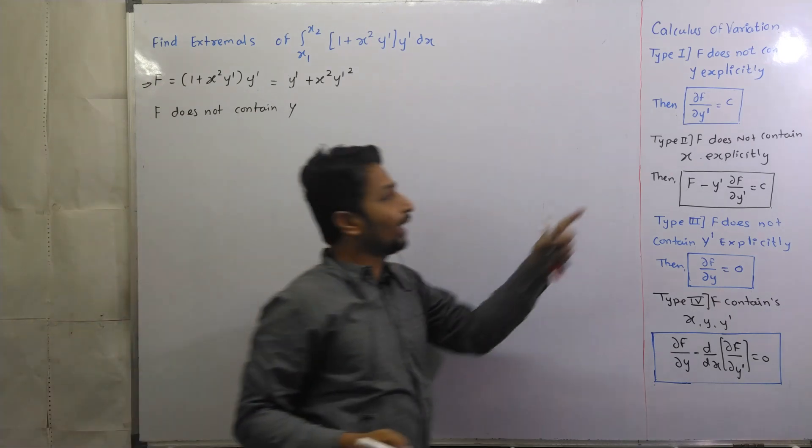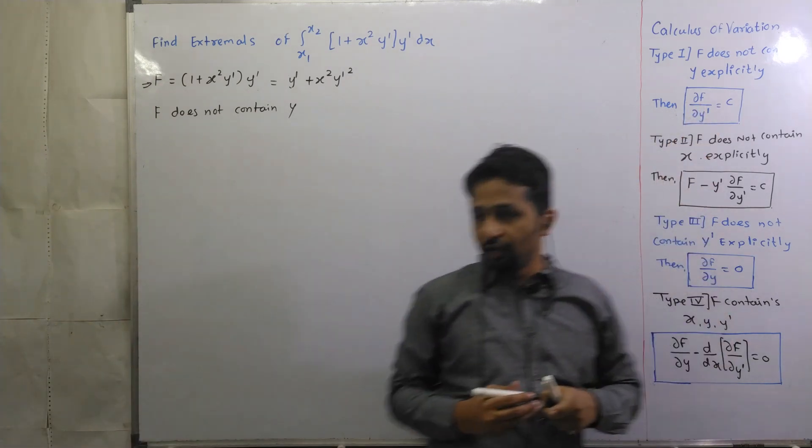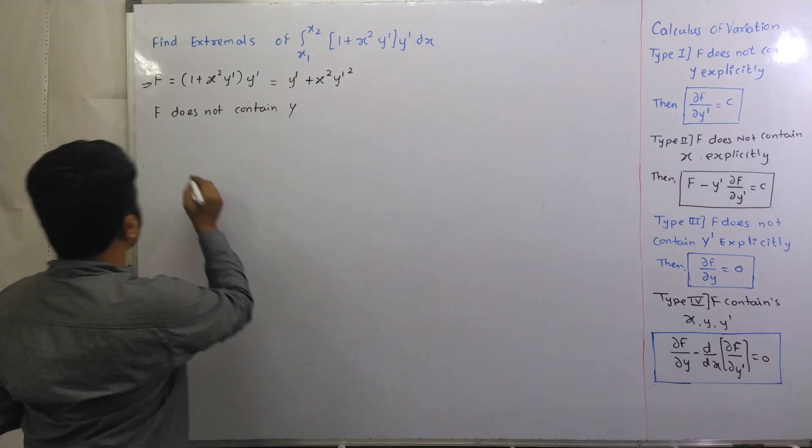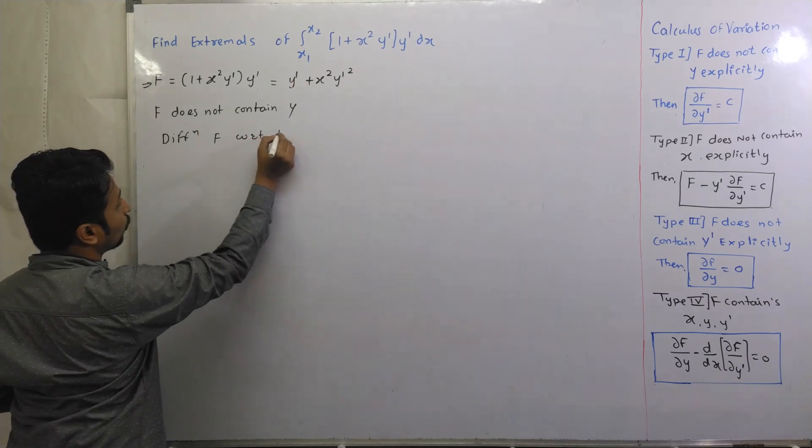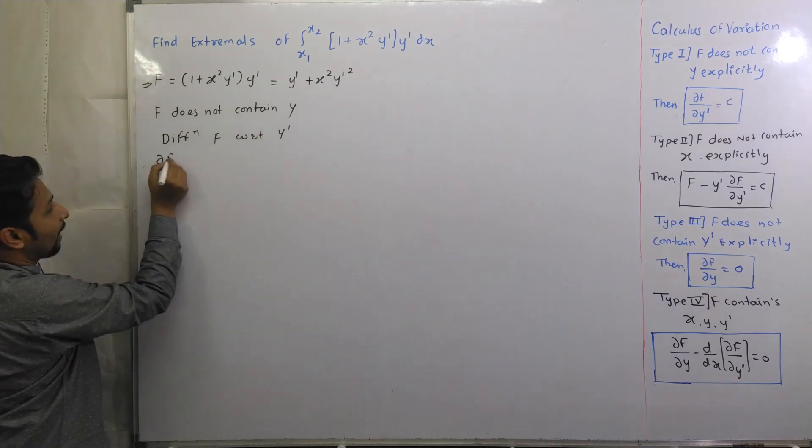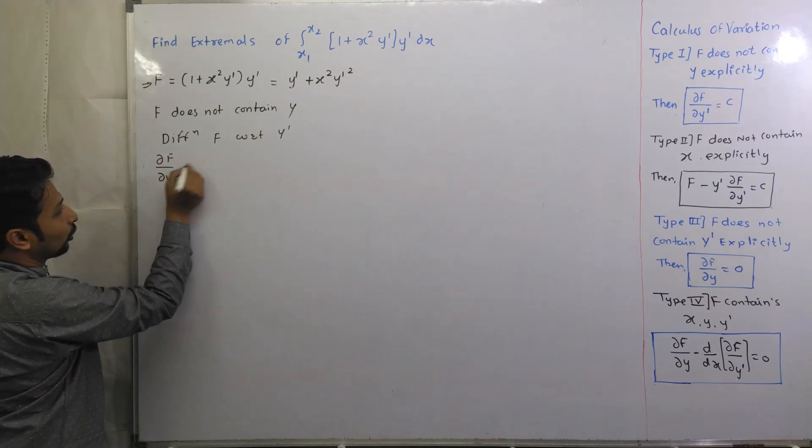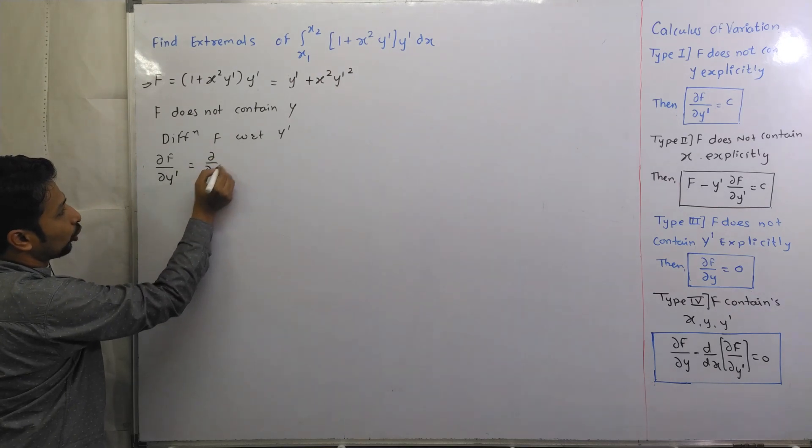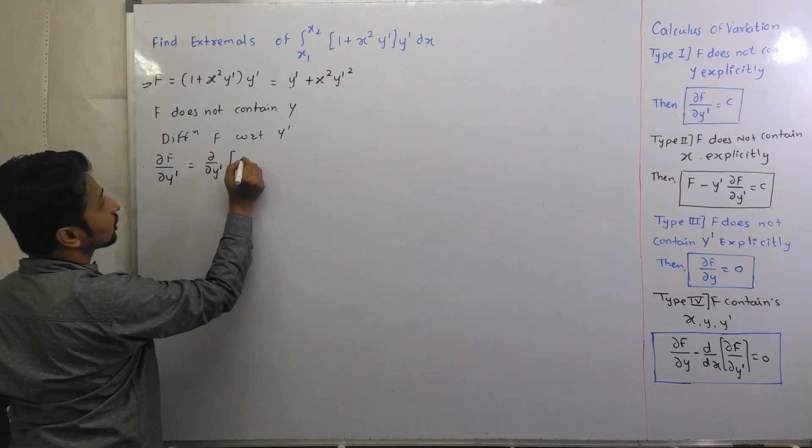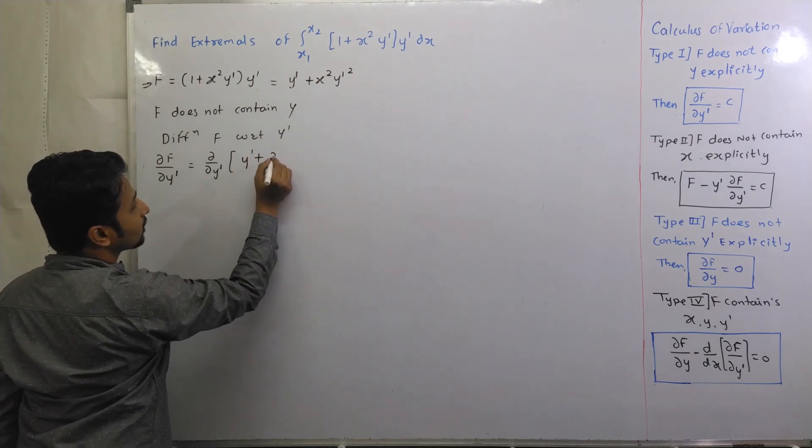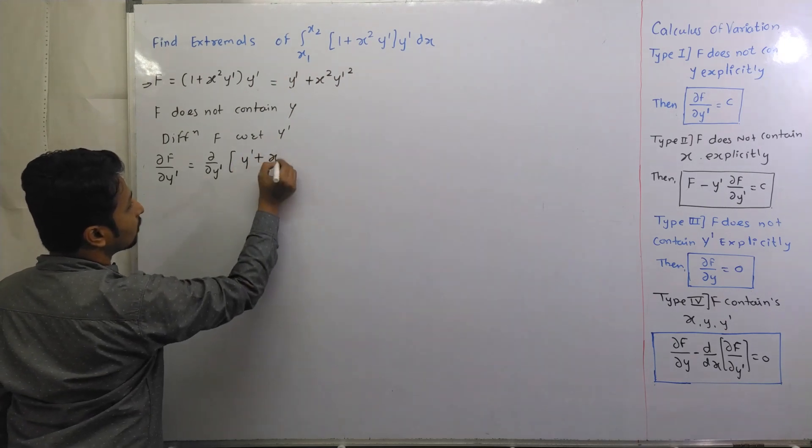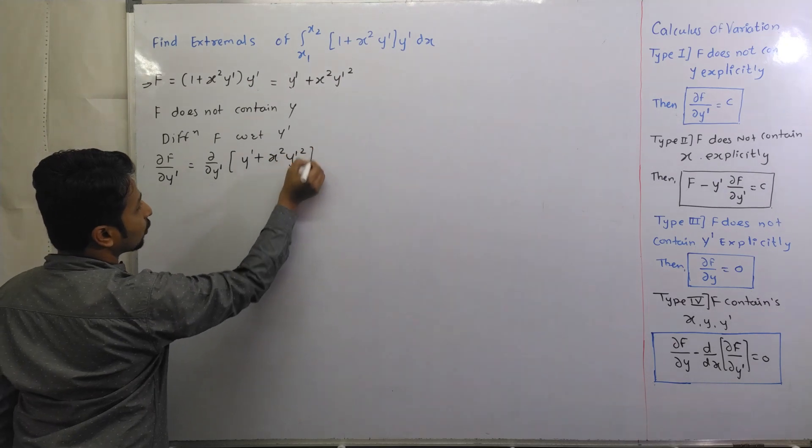So it is requirement that function, y dash will differentiate. So I will differentiate function with respect to y dash. So I will do f by do y dash. Do f by do y dash is equal to function y dash plus x square y dash square.